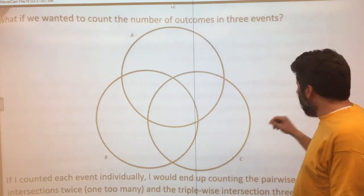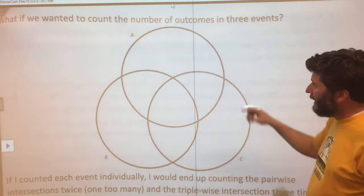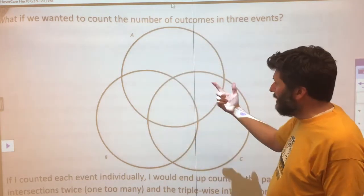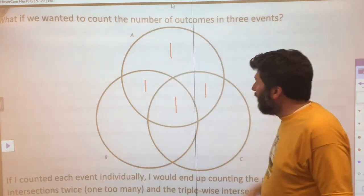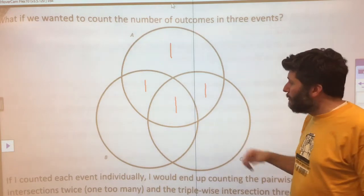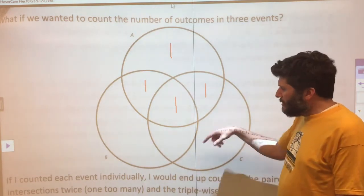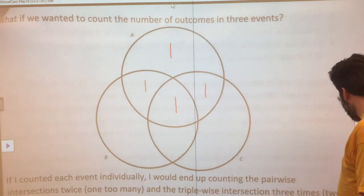What I could do is start by counting everything in A one time. I'm going to mark every section of the diagram that's in A with a one. I'm going to do the same things for B and for C.